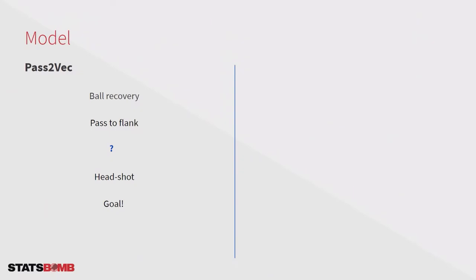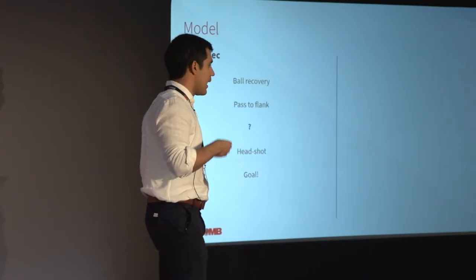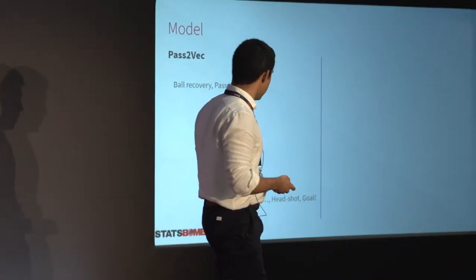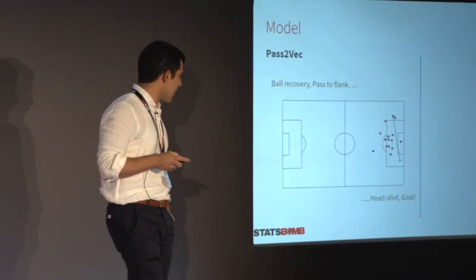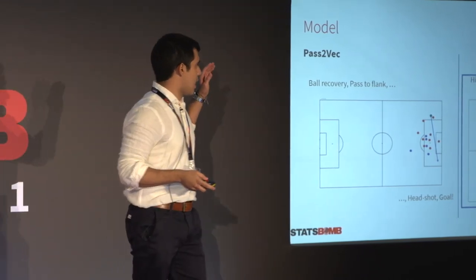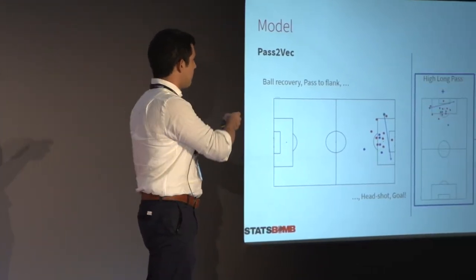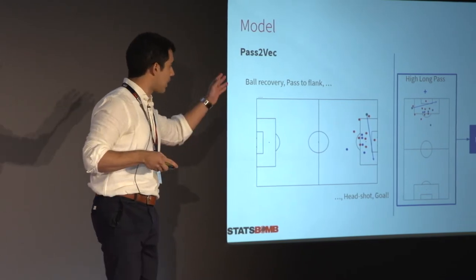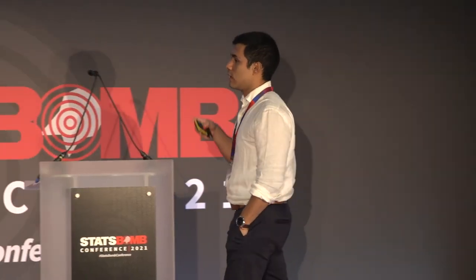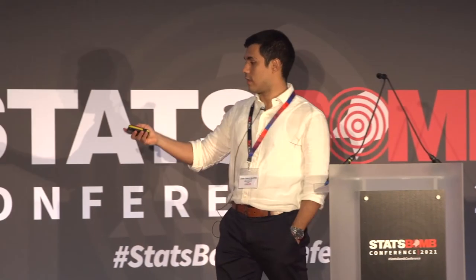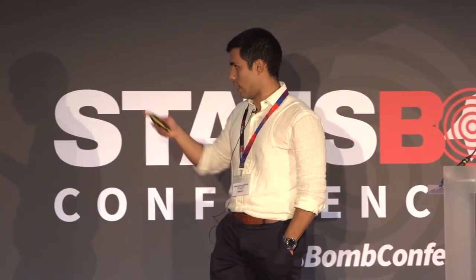We are going to translate this idea to football actions. Football is also predictable. If I give you the sequence: ball recovery, pass to flank, blank, headshot, and goal — most of you would say the missing action is 'a cross to the area.' So I'm going to do the same: I want to predict that ball recovery, pass to flank, headshot, and goal are actions that normally appear around a cross to the area.